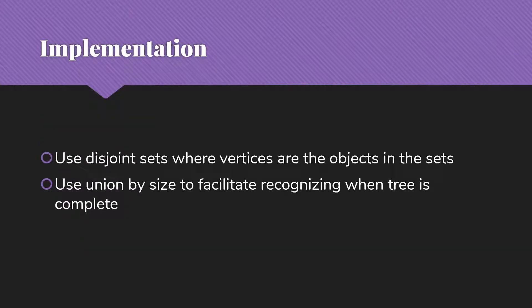So to actually make this work, we're going to need disjoint sets where our vertices are the objects in the sets. We're going to use union by size to facilitate recognizing when the tree is complete. So each time we're joining two trees with the edge we've just added to the minimum spanning tree, we're going to union the sets that those two vertices are in.